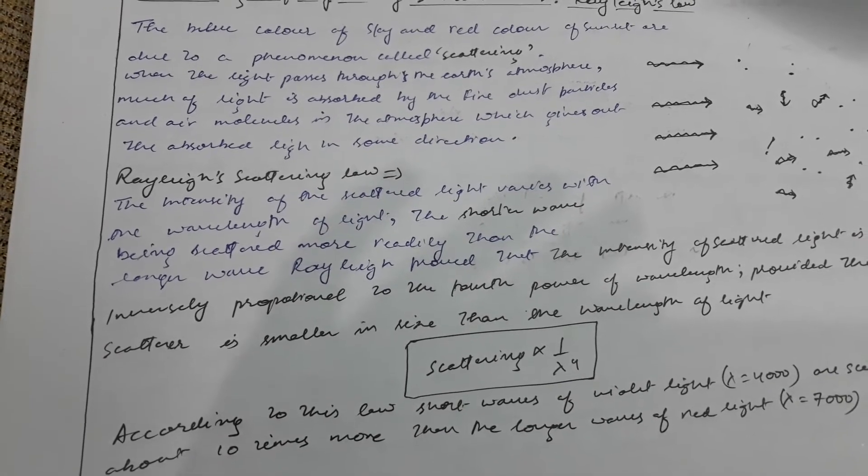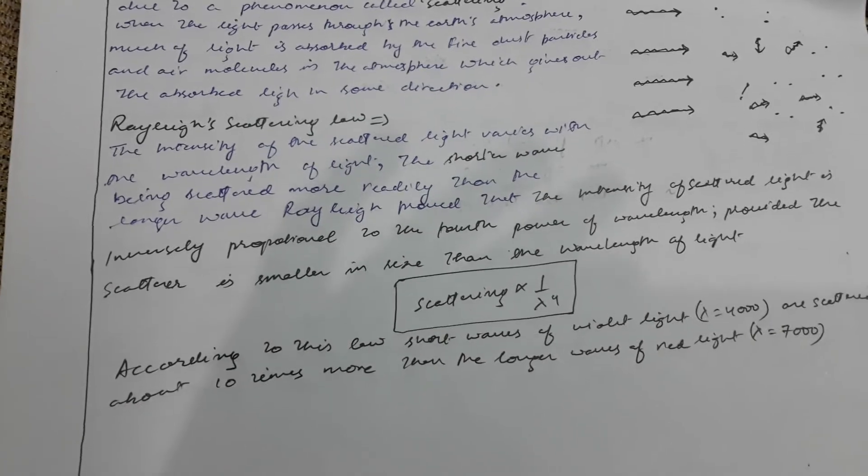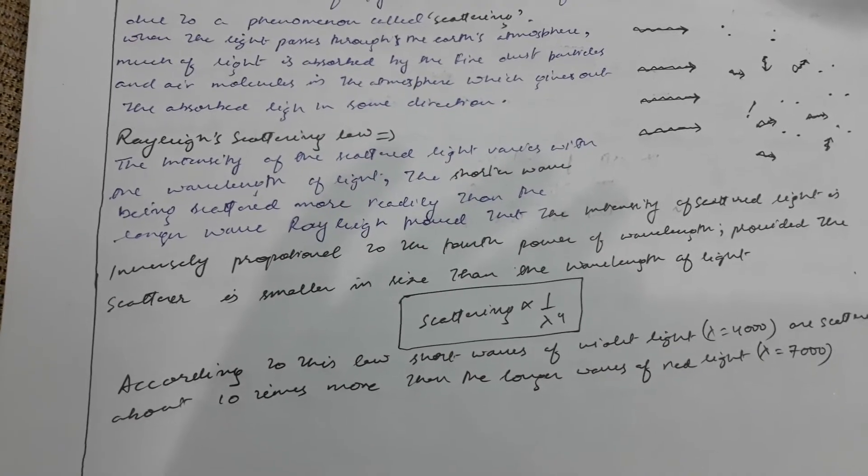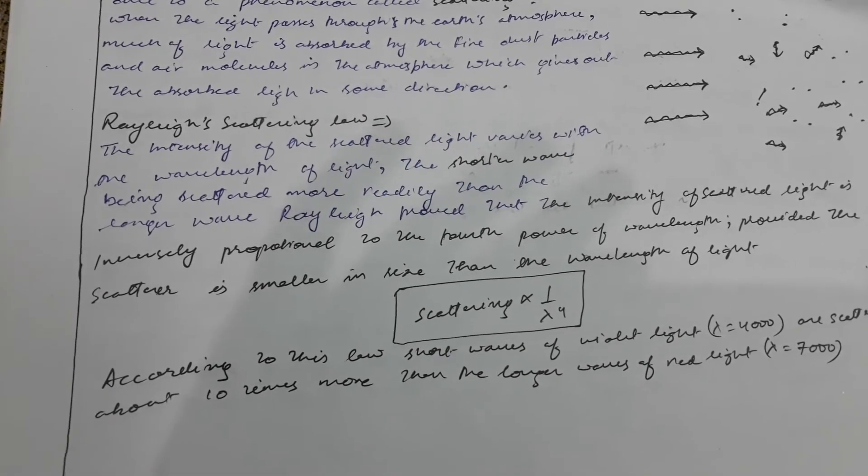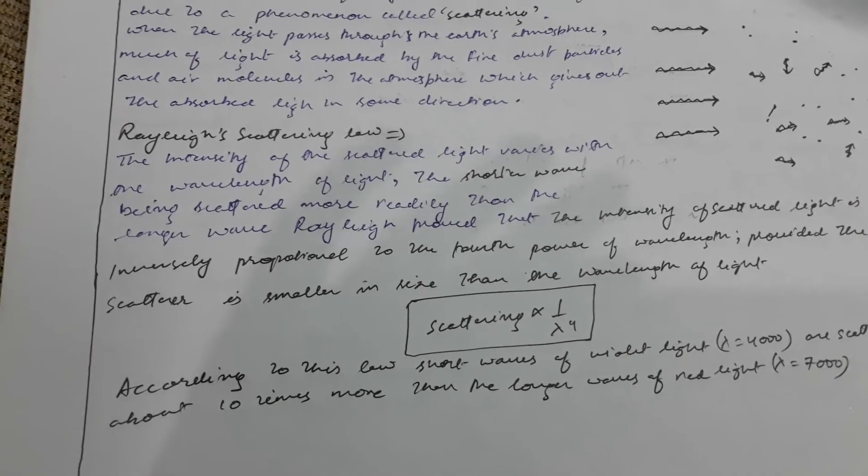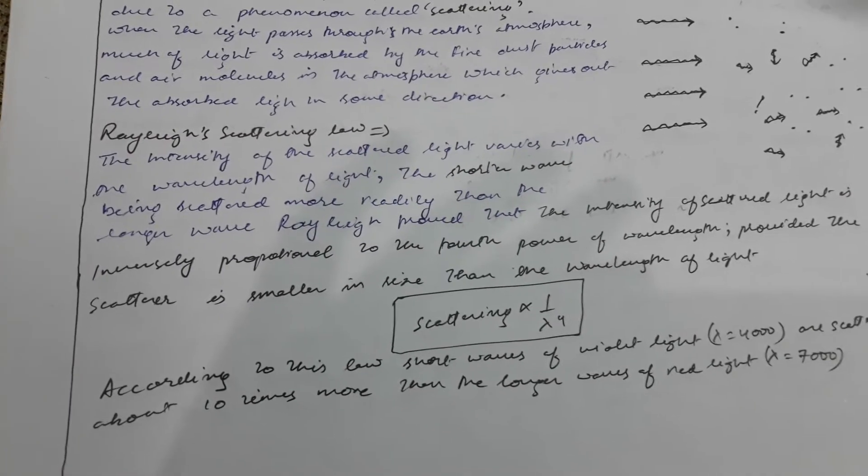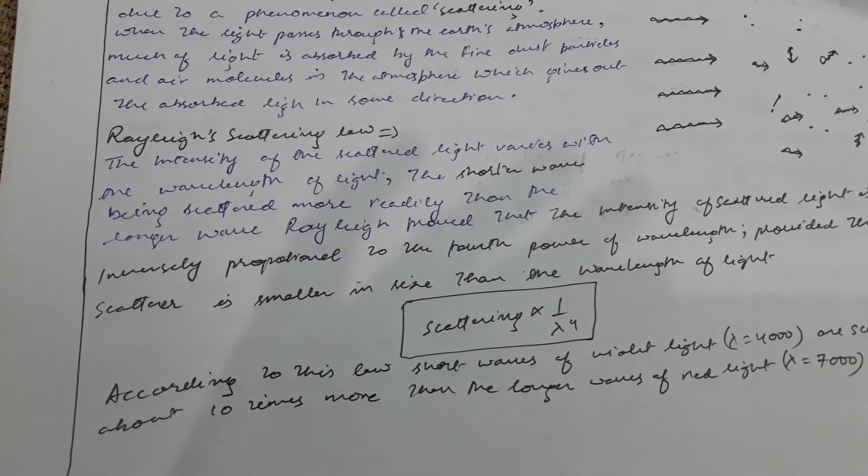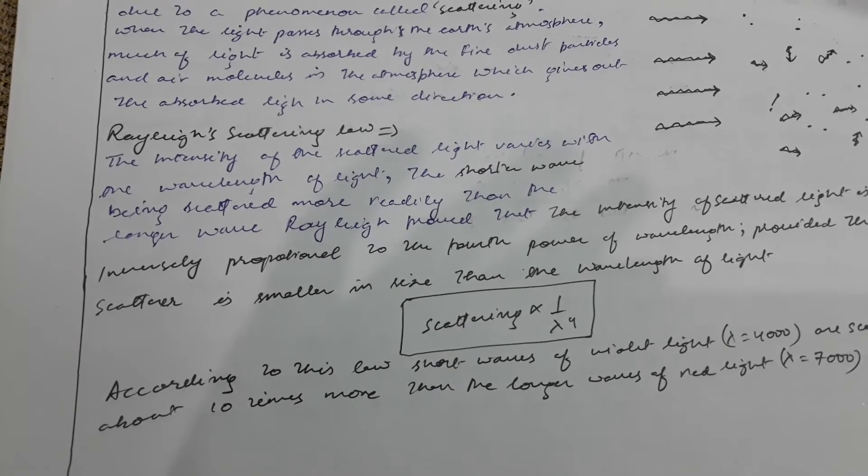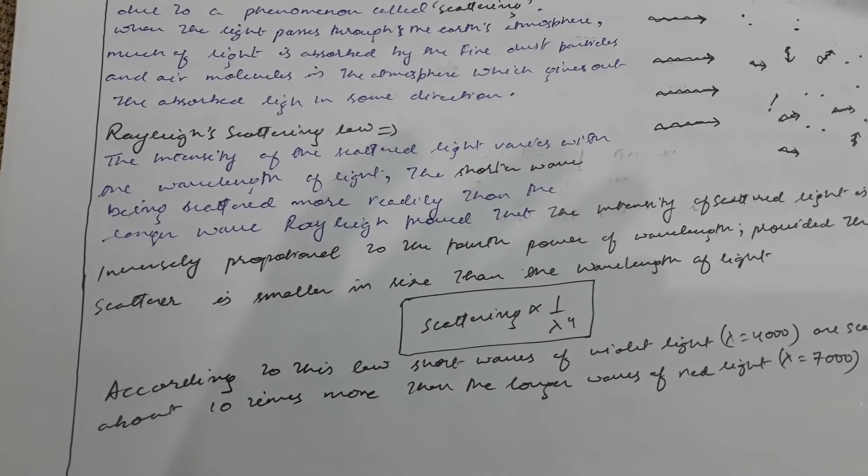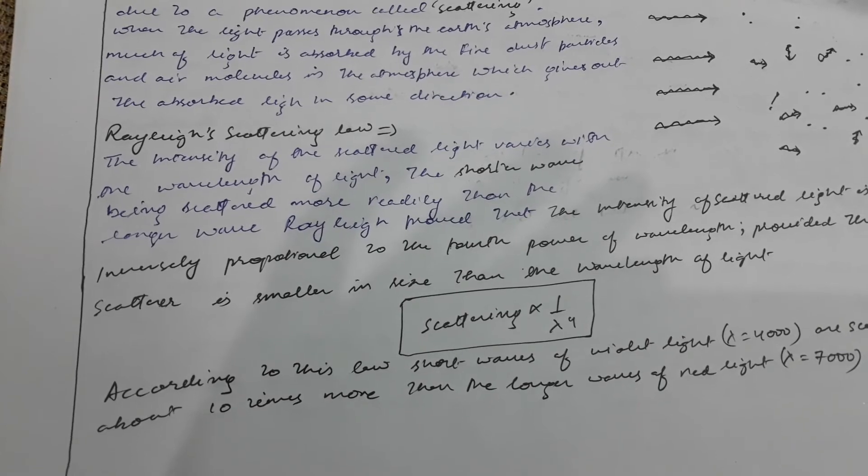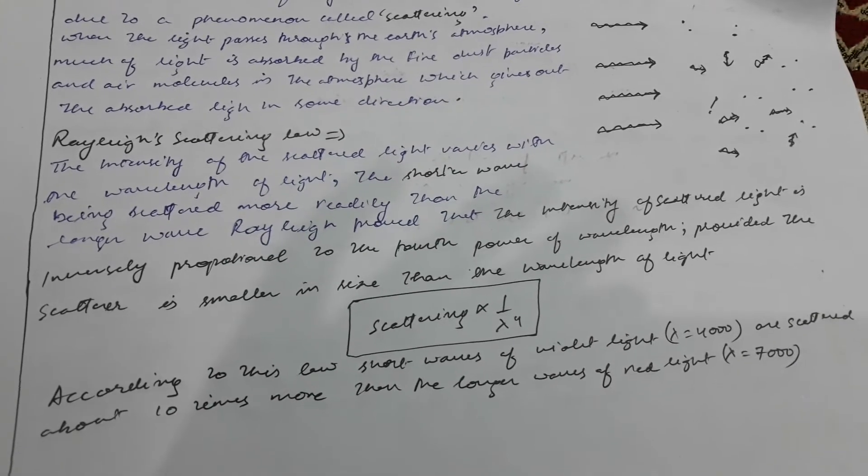Rayleigh's scattering law states that the intensity of scattered light varies with the wavelength of light, the shorter waves being scattered more readily than the longer waves.